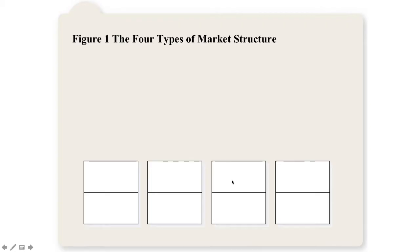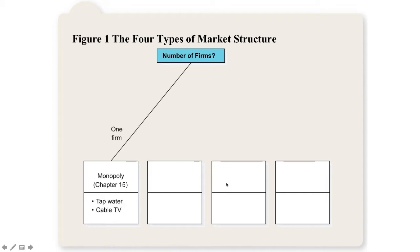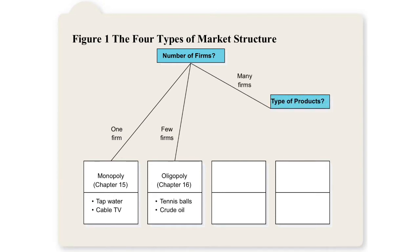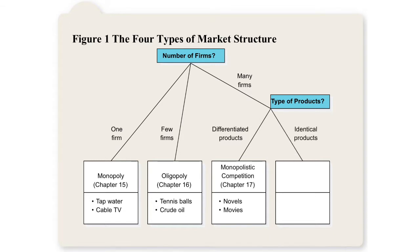We can look at it like this in terms of number of firms. One firm means we're looking at a monopoly. Few firms is an oligopoly. Many firms — if products are different, that's monopolistic competition; if products are similar or identical, that's perfect competition.